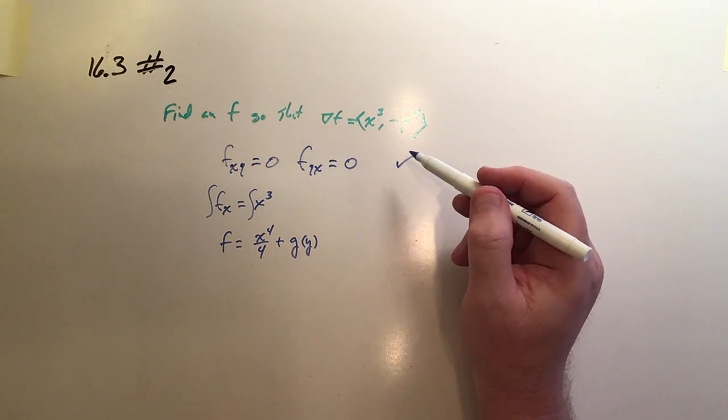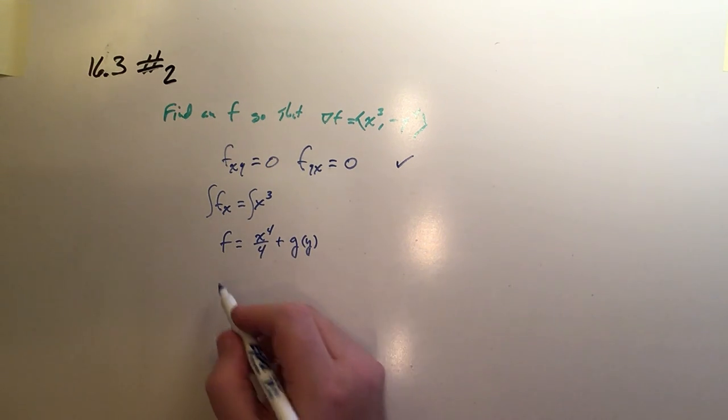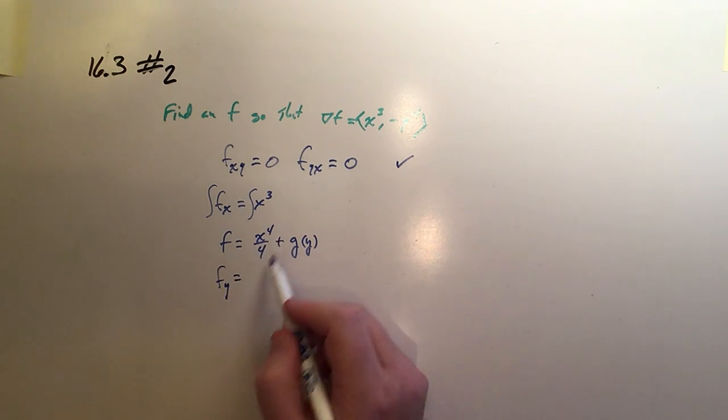Now what we do is say, this is a model of our original function f. Let's take its partial with respect to y, f_y. Well, this would be 0, and this would be g'(y).